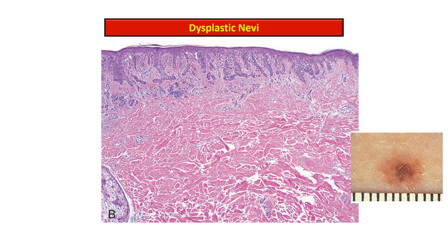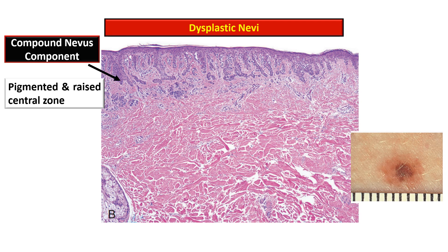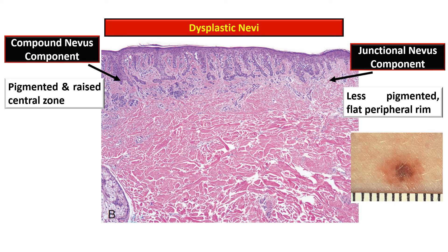This photomicrograph shows the histopathology of a dysplastic nevus. Comparing with the gross morphology: there is a central dark pigmented area and a surrounding less pigmented or hypopigmented area. Histologically, these contain both a compound nevus component and a junctional nevus component. The compound nevus component corresponds to the pigmented and raised central zone, while the junctional nevus component represents the less pigmented flat peripheral area.